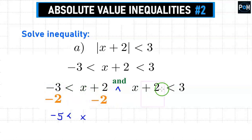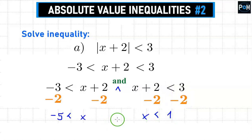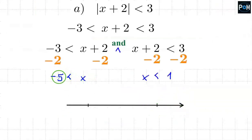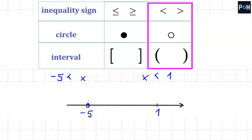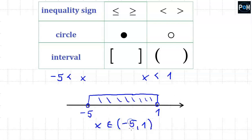In the second inequality, positive 2 and negative 2 cancel each other out, and 3 minus 2 gives me 1, so x is less than 1. Now I mark that on the number line, marking negative 5 and 1. Since x must be greater than negative 5, I put an open circle there and go right. Since x must be less than 1, I put an open circle there and go left. The intersection gives the solution: x belongs to the interval from negative 5 to 1.